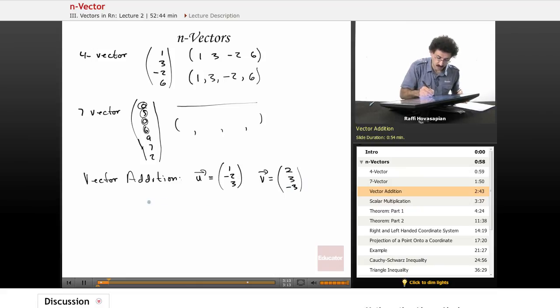And so our U plus V equals, again, it's a three vector. One plus two is three, minus two plus three is minus one, I'm sorry, plus one. And three minus three is zero. So we have the vector three, one, zero.